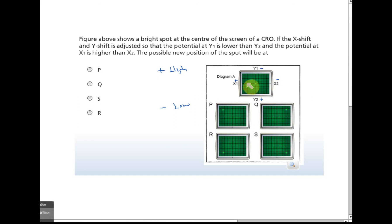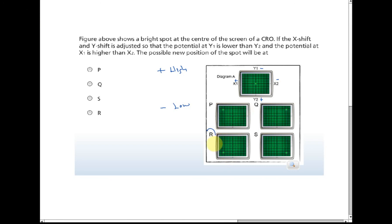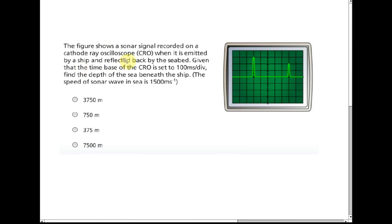This involves electrons. Electrons move towards the positive and away from the negative. So the electron beam moves toward the positive X1 — that is to the left — and also moves downward toward the positive Y2. So the spot shifts left and downward, and the answer is R.